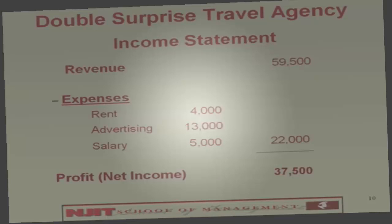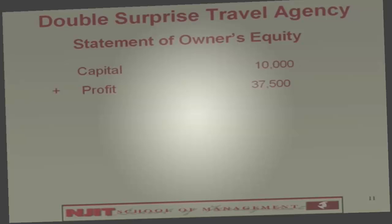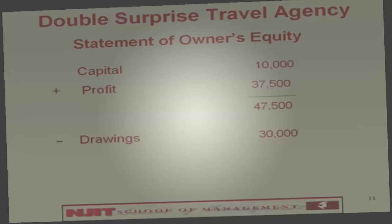Let's do the statement of owner's equity. It has capital — which was $10,000 — plus profit of $37,500 from the income statement, giving total owner's equity of $47,500, less drawings of $30,000 for personal use, giving equity of $17,500.